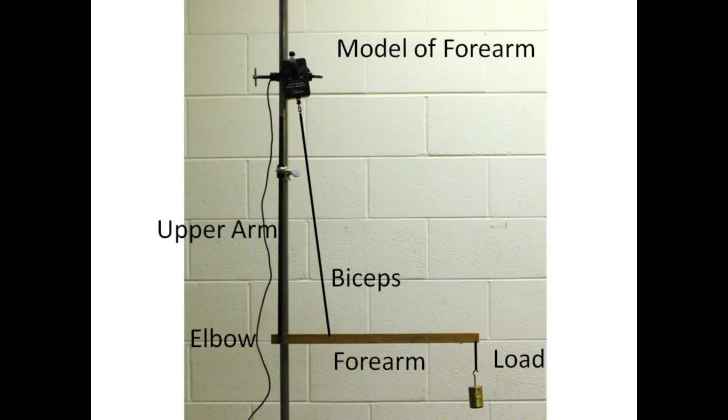Our model has a solid rod upper arm that can be locked in place at various angles, a wooden forearm with a pin at the elbow joint, a string with upward tension to represent the biceps muscle, and a load attached at the far end of the forearm. A force sensor allows us to measure the tension in the biceps.